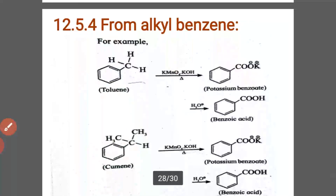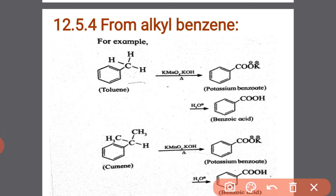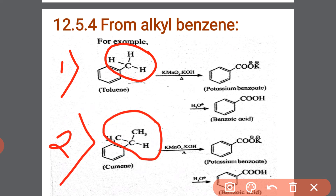Next, from alkyl benzene. We can prepare aromatic carboxylic acid by this method. Alkyl benzene on treatment with dilute HNO₃, or alkaline or acidic KMnO₄, or chromic acid: the entire alkyl side chain, regardless of its length — for example, the CH₃ group — is oxidized to a carboxyl group, COOH, in the presence of KMnO₄ or KOH. This applies to both the general example and the second example shown.